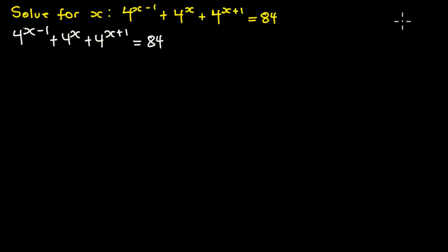We are going to use the law of indices to split up the first term and the third term. The law states that x exponent (a plus b) is the same as x exponent a multiplied by x exponent b.